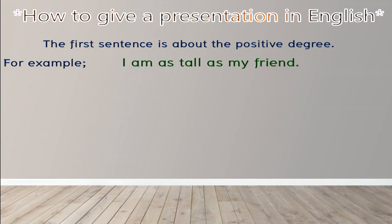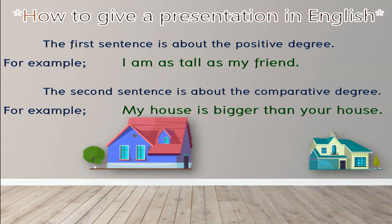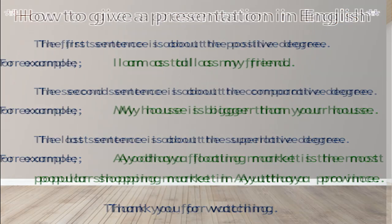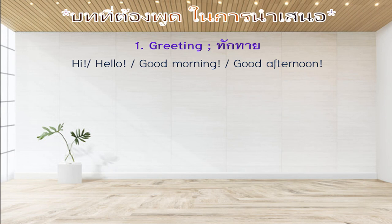Let's start. The first sentence is about the positive degree — for example, I am as tall as my friend. The second sentence is about the comparative degree — for example, my house is bigger than your house. The last sentence is about the superlative degree — for example, Ayutthaya floating market is the most popular shopping market in Ayutthaya province. Thank you for watching.